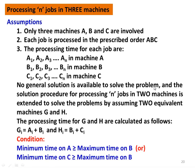How to calculate the processing time in G and H: Gi = Ai + Bi and Hi = Bi + Ci. The three machines are now converted into two machines G and H with the processing time as defined. The condition is: minimum time on machine A should be greater than or equal to maximum time on machine B, OR minimum time on machine C should be greater than or equal to maximum time on machine B. If any one of these two conditions is satisfied, then we can solve the problem.